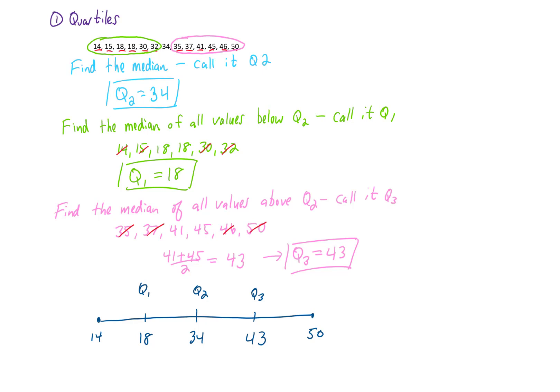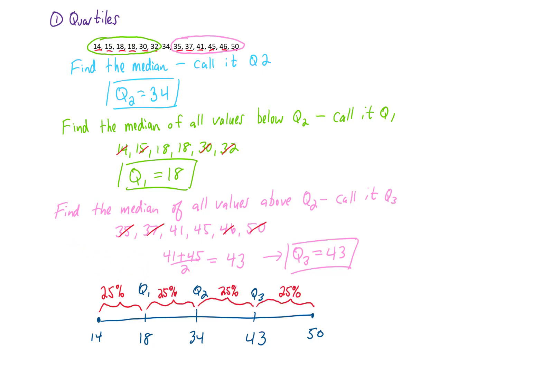Now that we've found our quartiles, we can say that 25% of our data lies in each section. For example, you can see from this graph that 75% of our data falls below the value 43, or the third quartile.